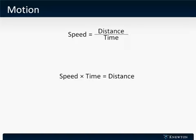One of the most common rates is motion. The equation for motion is speed times time equals distance. We can also write this as speed equals distance divided by time.